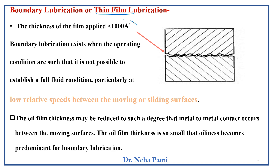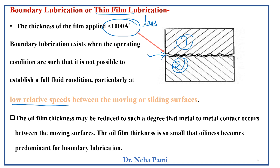Coming to boundary lubrication or thin film: here the thickness is less than 1000 Angstroms and it typically acts as a boundary between the two surfaces. In this condition, the machines are working at a low speed, so there is no hydrodynamic wedge or pressure generated. Because of that, the lubricant does not fill up the space, the thickness becomes less, and that is why it is called thin film. It is not possible here to establish a full fluid condition, especially at a low relative speed, so frictional force can only be reduced by this thin film.